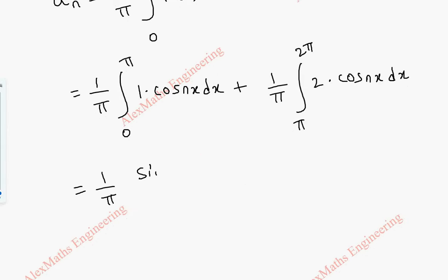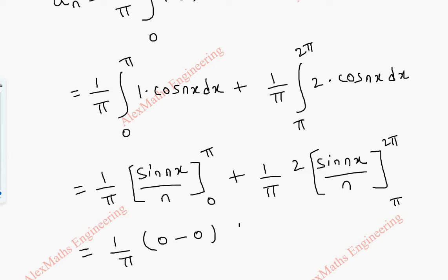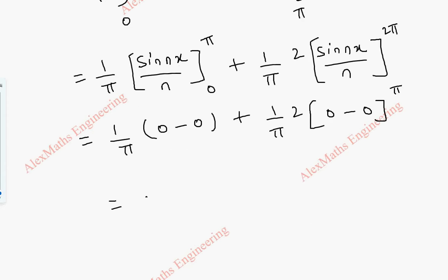Integrating, we get (1/π)[sin(nx)/n from 0 to π] plus (1/π)[2·sin(nx)/n from π to 2π]. Substituting limits: sin(nπ)/n = 0, and the lower limit also gives 0. Similarly, sin(2nπ) = 0 and sin(nπ) = 0. So aₙ = 0.